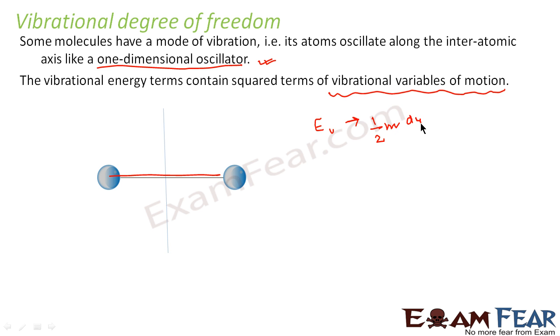One is half m dy by dt whole square. This is the kinetic energy. And the other is half k y square.